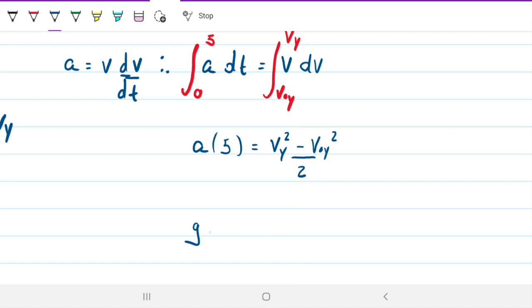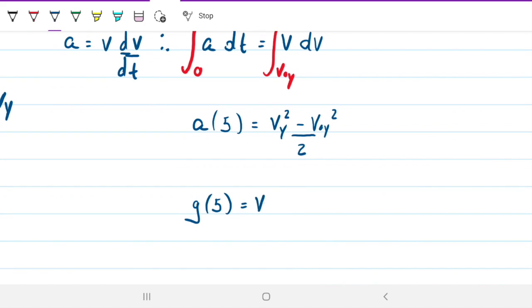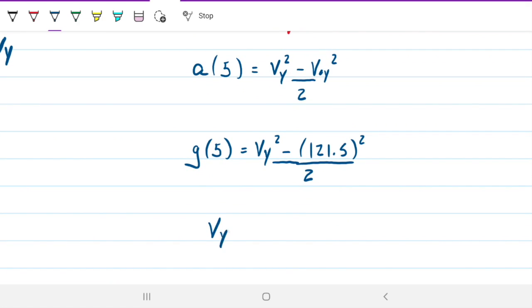We're going to have Vy squared minus V0Y squared divided by two. Acceleration is gravity, so we have gravity times five. That equals V0Y minus, what was our 121.5 here? 121.5 squared, the whole thing divided by two. So now the only unknown that I have in this equation is Vy. I can take the square root and call that 170.5 meters per second. That's the final velocity that we have on the y direction.